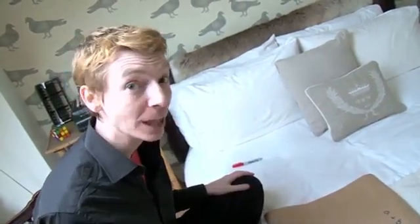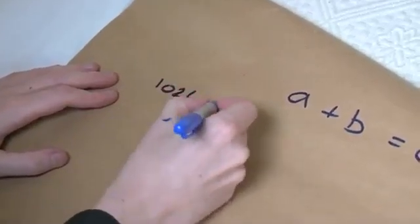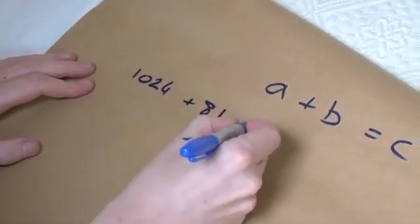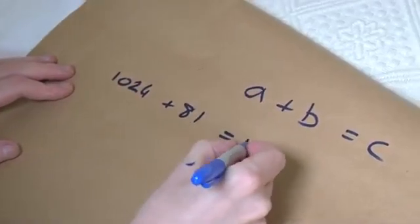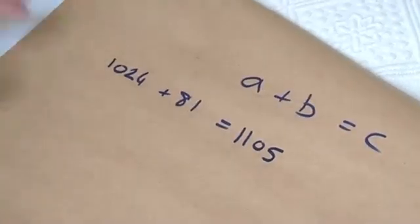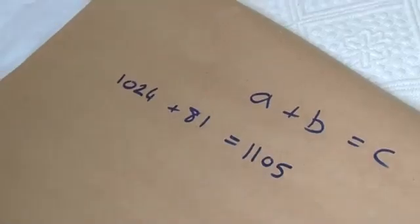Alright, let's try an example that works. 1,024 plus 81 equals 1,105. Right, now let's just check they don't share any factors.